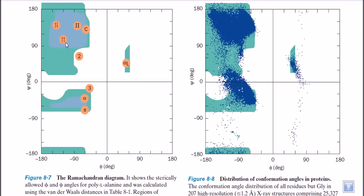By looking at the standardized distribution we can say whether conformations are stable or not, and what type of torsional angles are preferred to make secondary structures — whether a particular torsional angle leads to the formation of favorable alpha helices or beta sheets. It shows the sterically allowed phi and psi angles for polyalanine, meaning if we join alanine amino acids one by one to make a chain, and it was calculated using the van der Waals distances between the CO and NH groups.